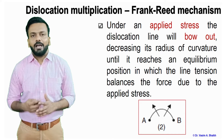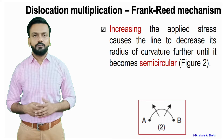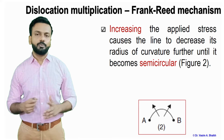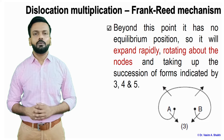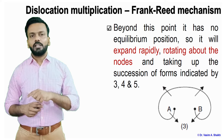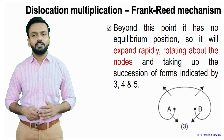Under the applied stress, it will bow and try to balance the force due to the applied stress. At one point, it will become a semi-circular line. If you keep on applying the load, it finally reaches a point where it is a semi-circular line. When you apply the load beyond this point, as shown in figure 3, the dislocation line will expand rapidly and try to rotate about its nodes A and B, taking a position as shown in figure 3.